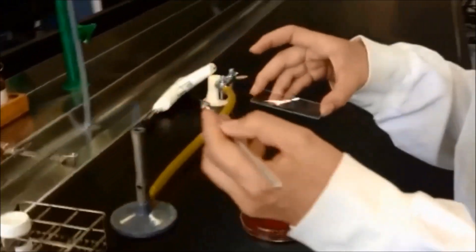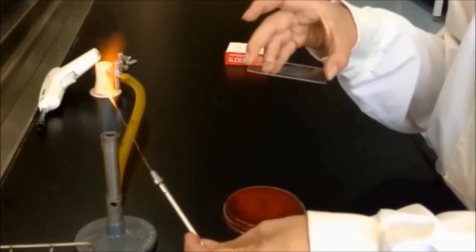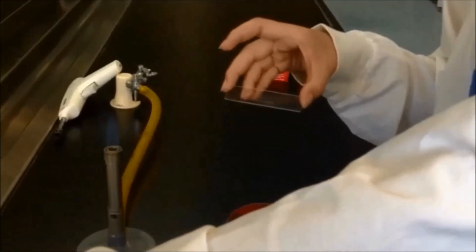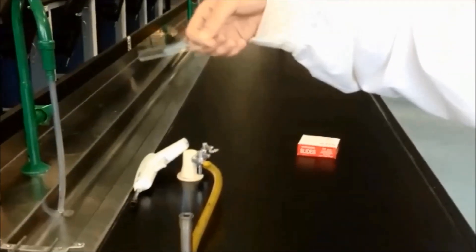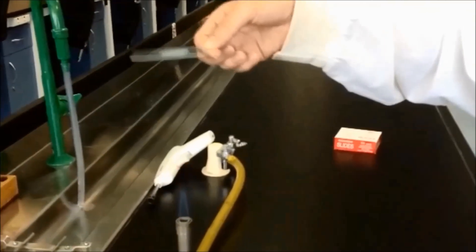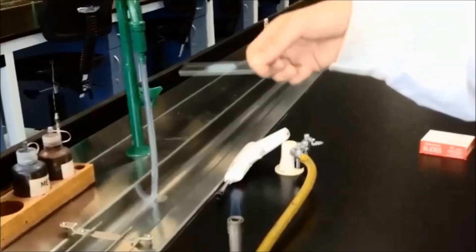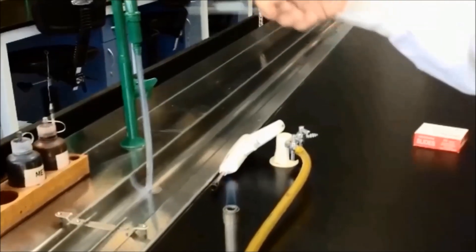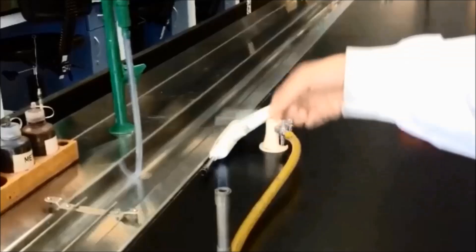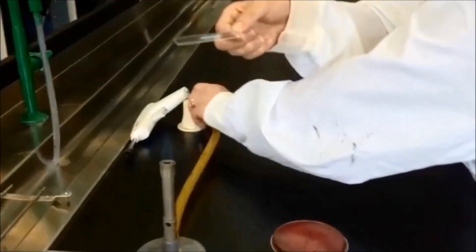Once again sterilize the loop. Dry the slide above the Bunsen burner flame and fix the smear in the same manner as before. You are now ready to Gram stain your fixed smears of bacteria.